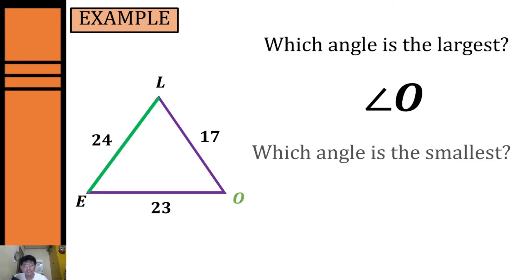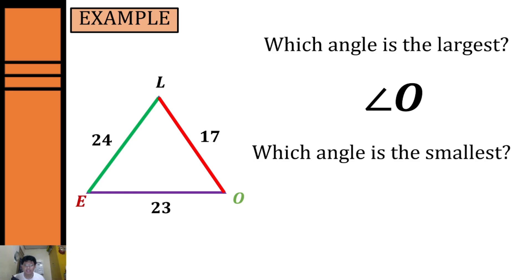Now let's proceed to identifying the smallest angle. To determine which angle is the smallest we have to identify first the shortest side. Our shortest side is side LO with 17. Using the Side Angle Inequality Theorem, the angle opposite the shortest side is the smallest angle, so our smallest angle will be angle A.